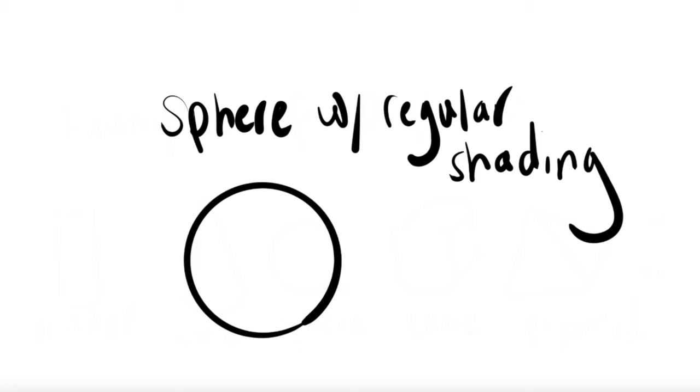Let's practice creating the illusion of form on a few different objects. Let's start by drawing a circle and turning it into a sphere by using some regular shading. When we're creating form, we want to make sure that we have a consistent light source and then we have a range of value from light to dark.